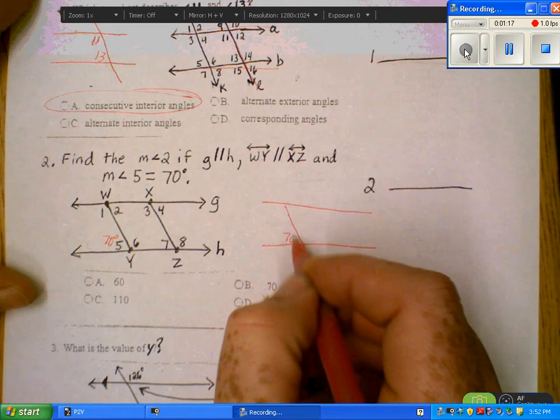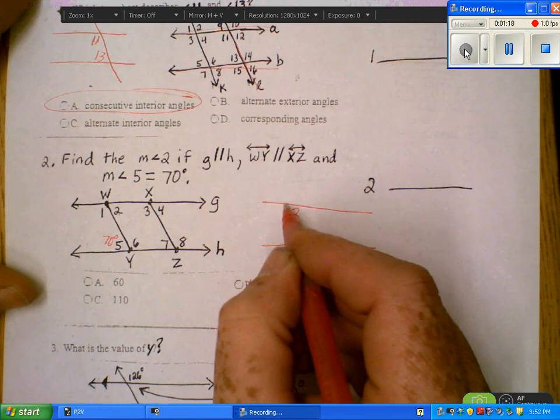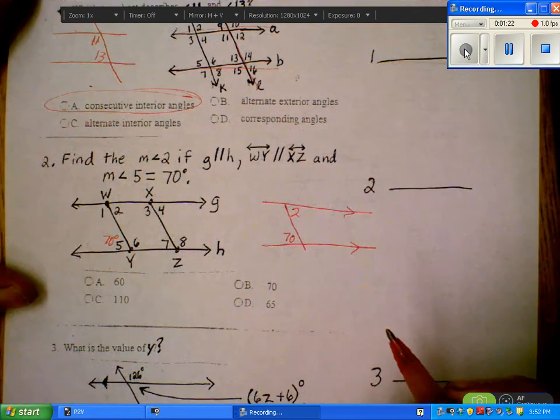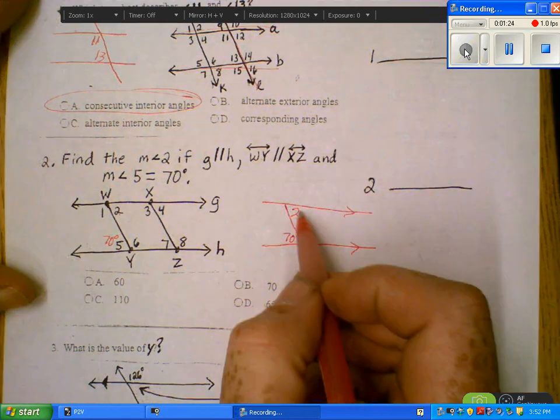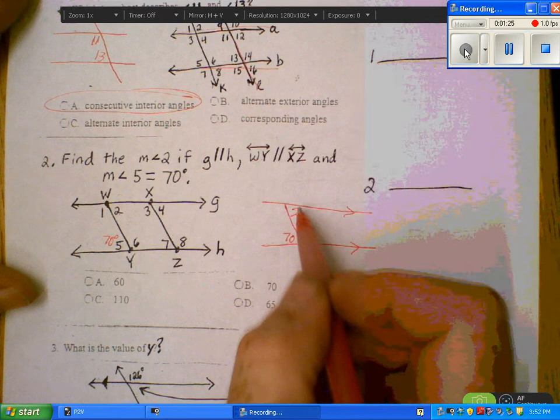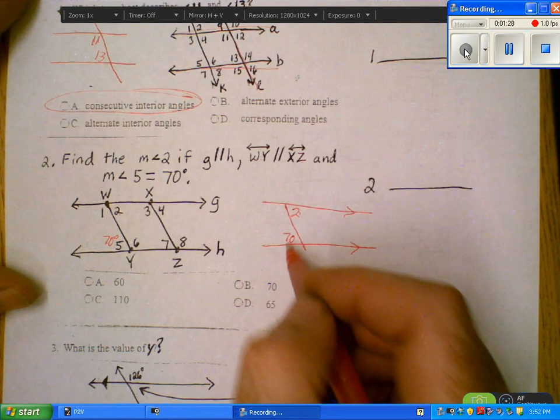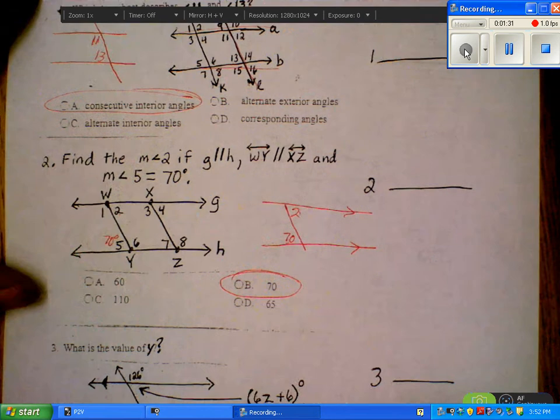This is 70, this is angle 2. We know that these two lines are parallel. The alternate interior angles, so they have to be the same. So angle 2 would have to be 70.